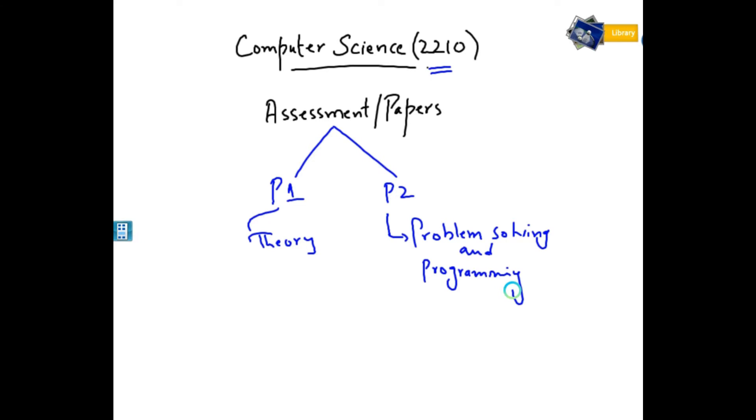Paper one is all about theory, just short and structured questions. Like three marks, four marks, two marks, one marks. It is of 75 marks.